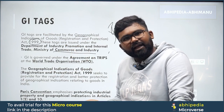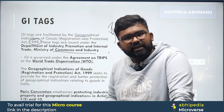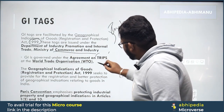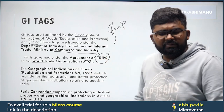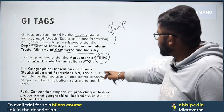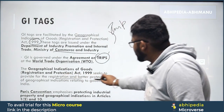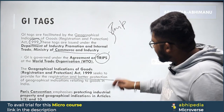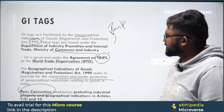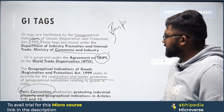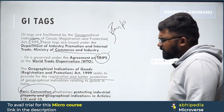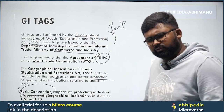GI Tags are governed through the Ministry of Commerce, and are under the agreement of TRIPS — write TRIPS full form and when this agreement was signed in the comments. The Act seeks to provide registration for better protection. This particular thing is also under the Paris Convention, which emphasizes industrial property and geographical indications in Articles 1(2) and 10. Remember the Paris Convention.